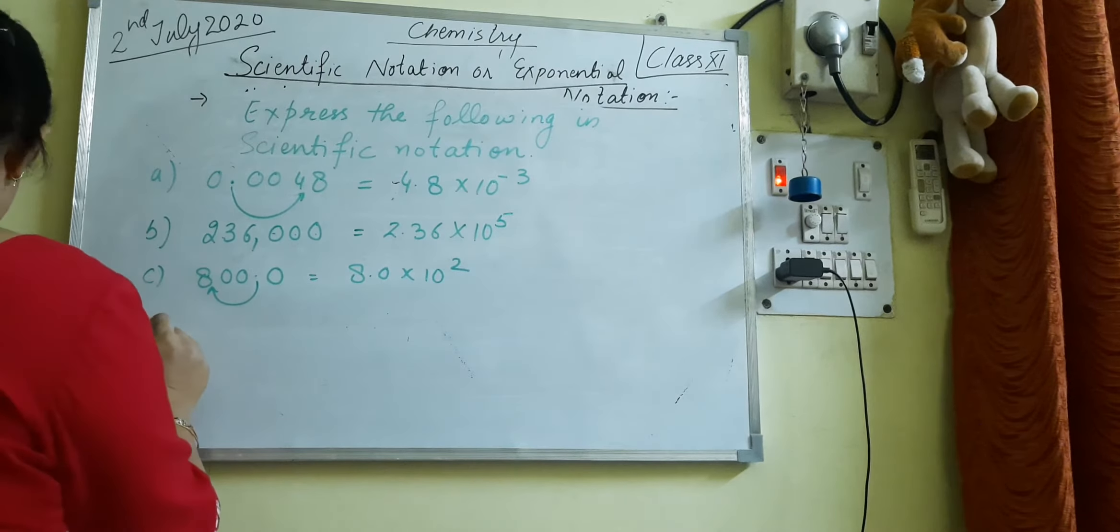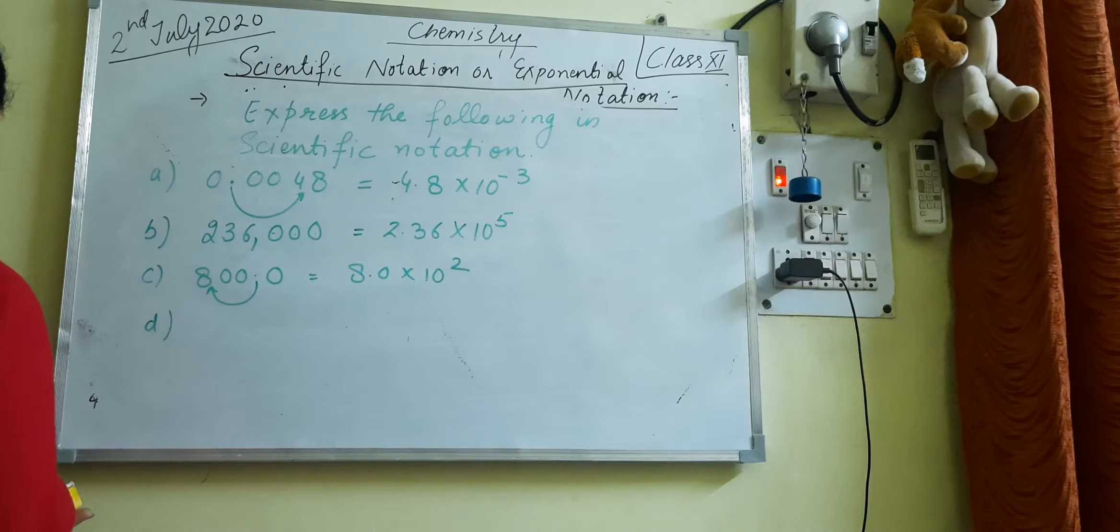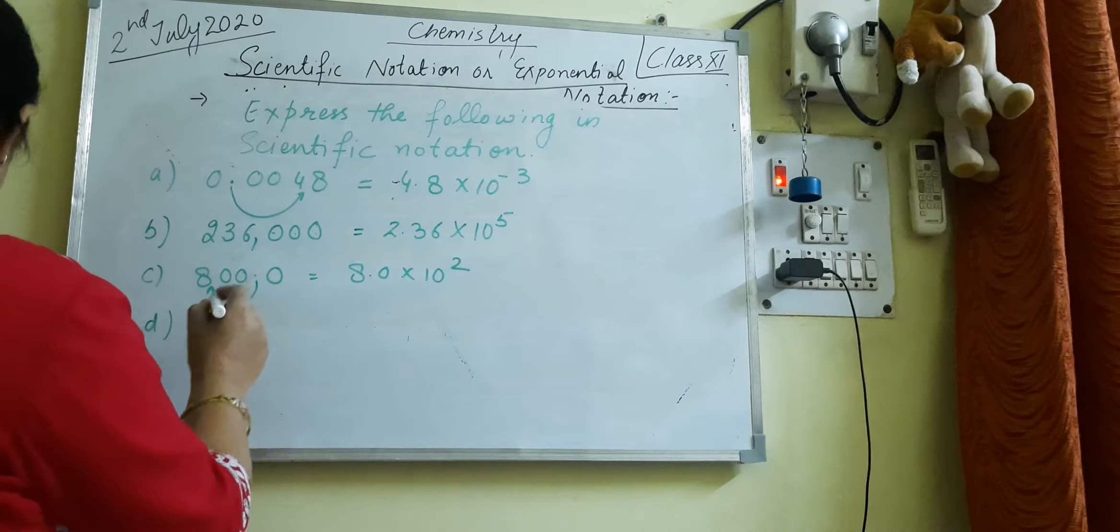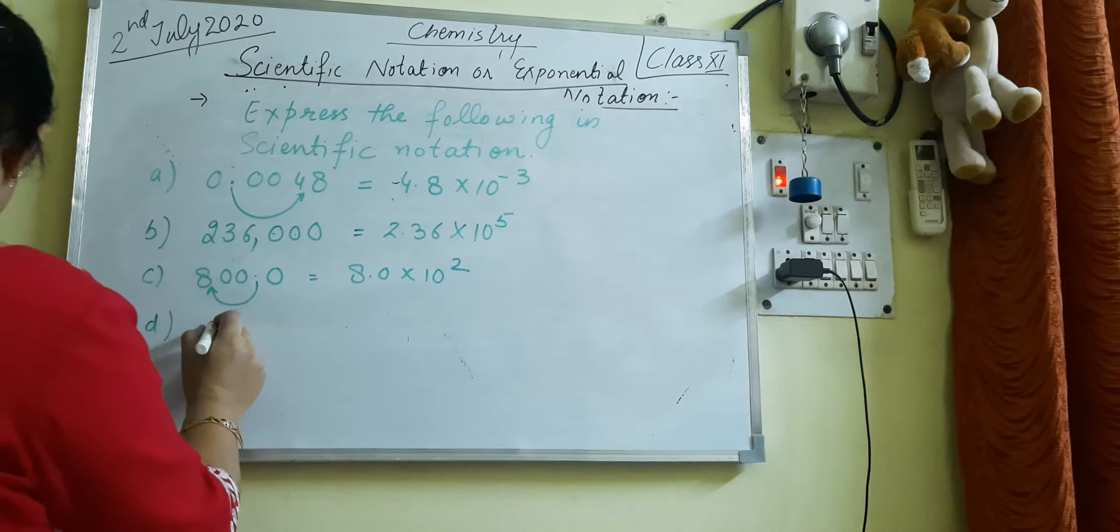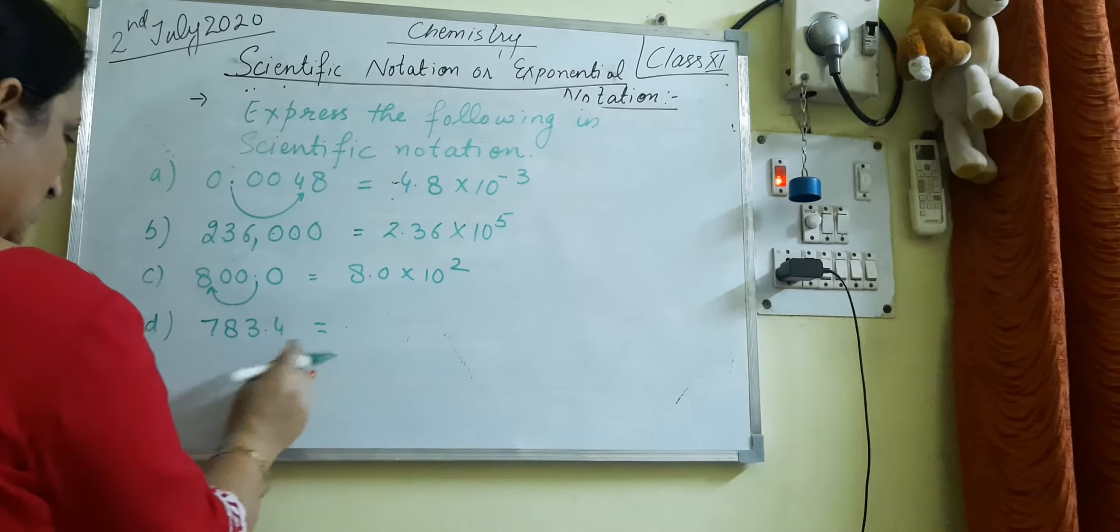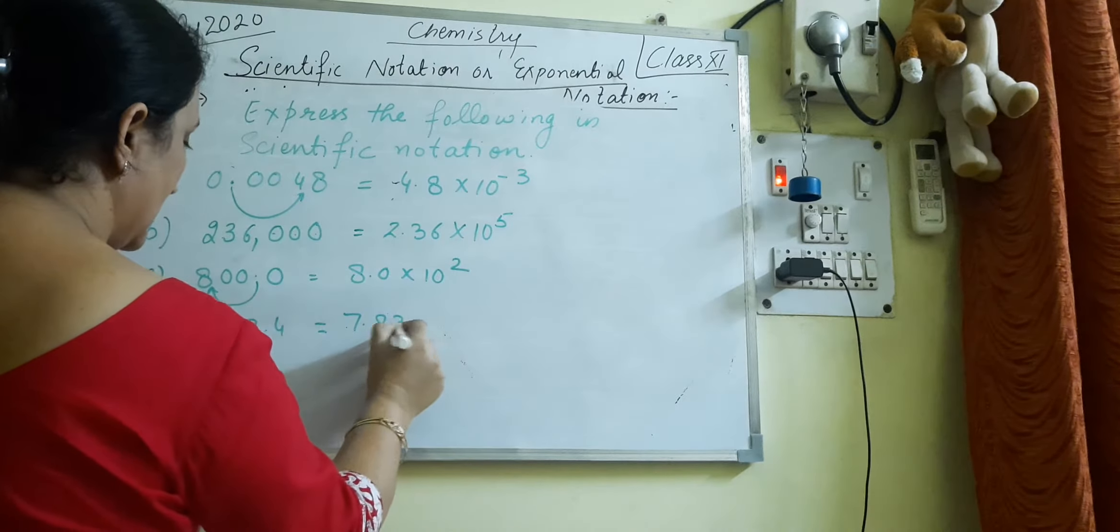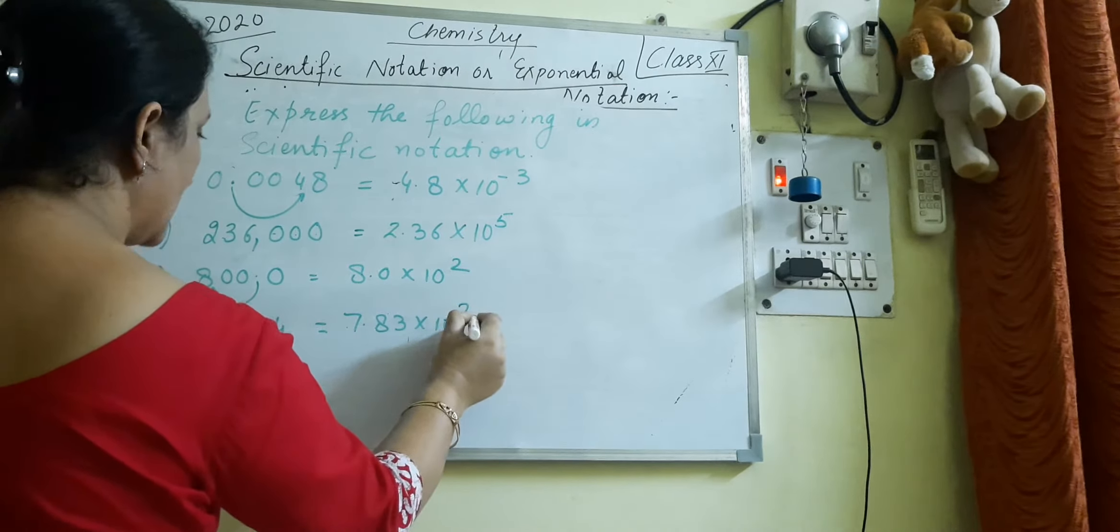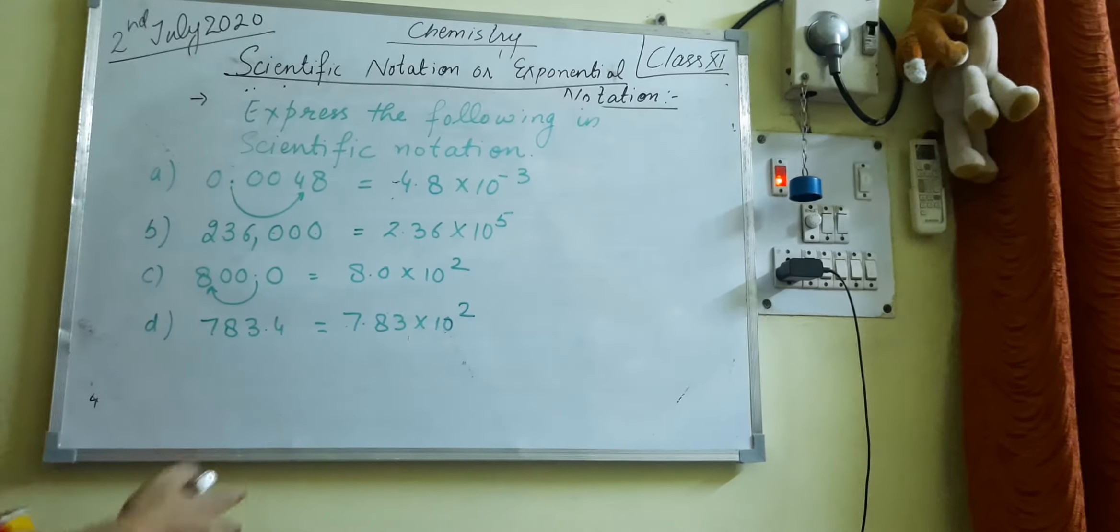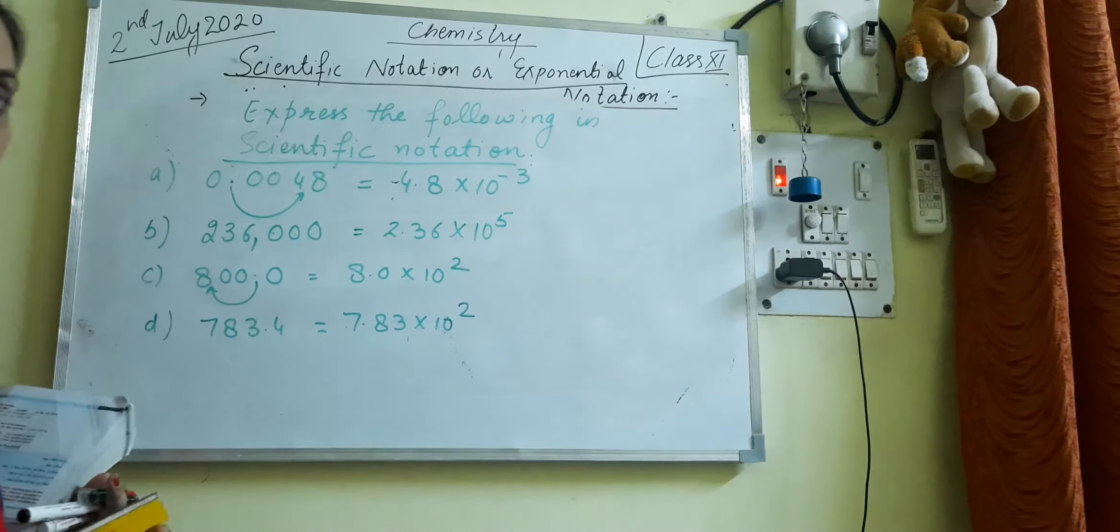Then 783.4. So again it's going to move toward the left direction. It becomes 7.834 into 10 raised to the power 2. So in such way we express the scientific notations.